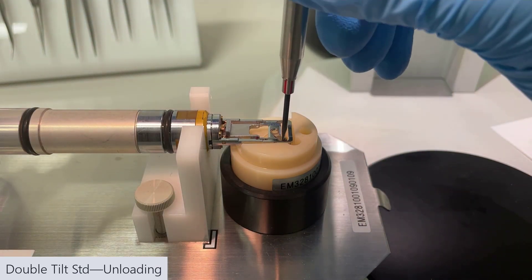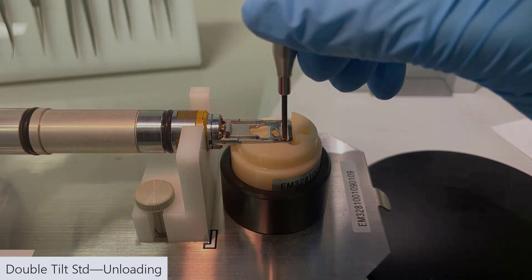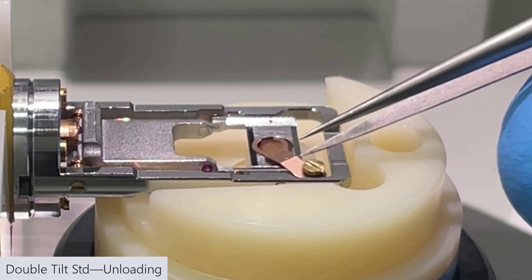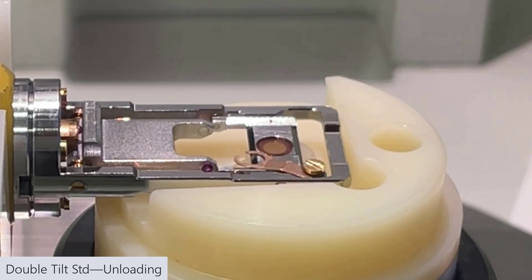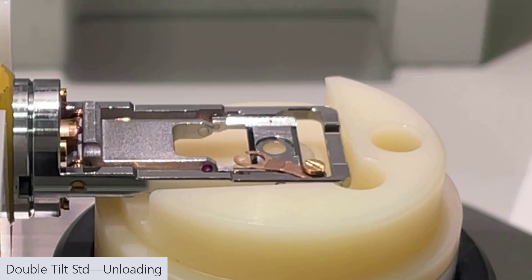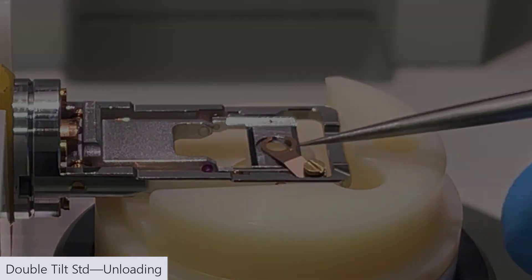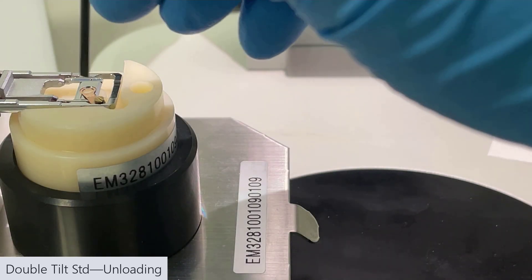it's the same process in reverse. We loosen our screw. We move the metal piece out of the way. Here I have to use vacuum tweezers, so I'm pulling the sample out, putting it in its holder or case, move the metal piece back in place, seated properly, and screw it down.